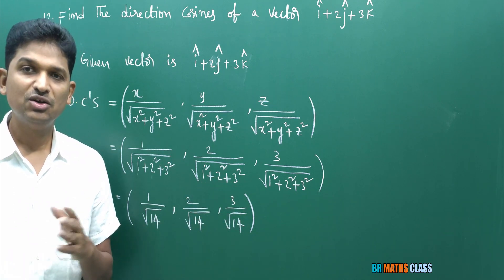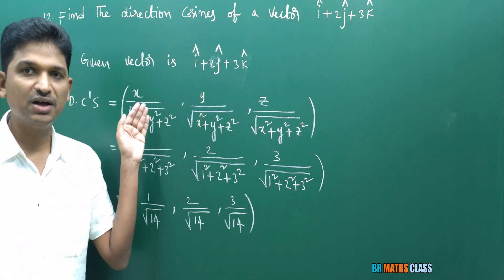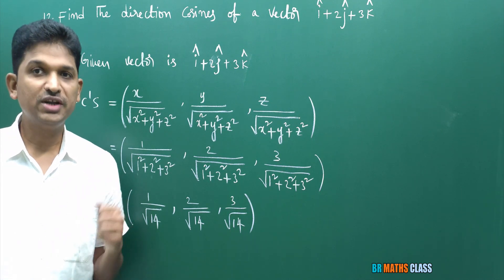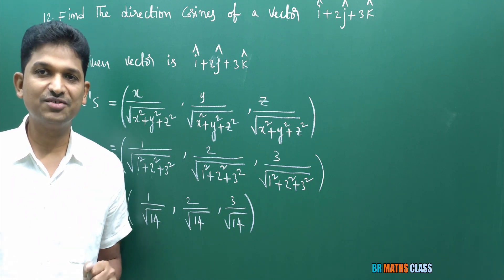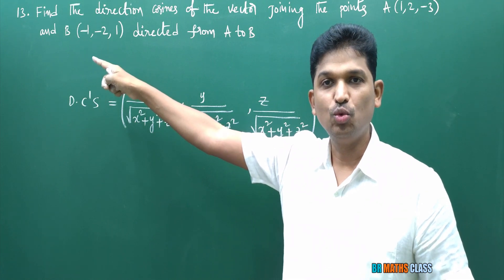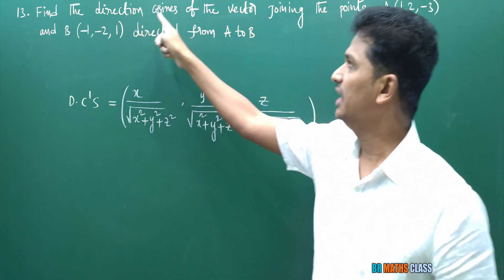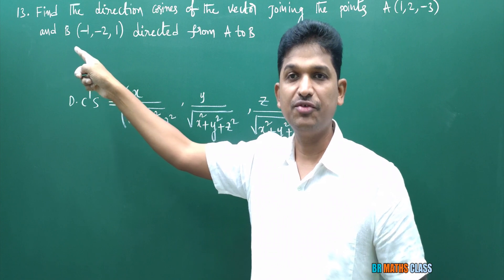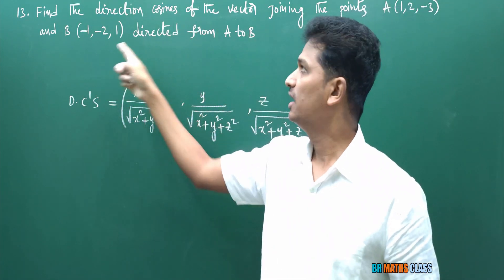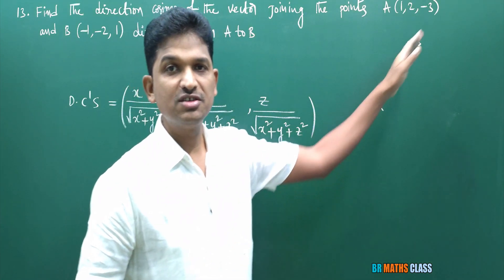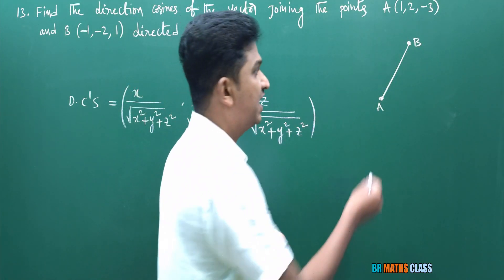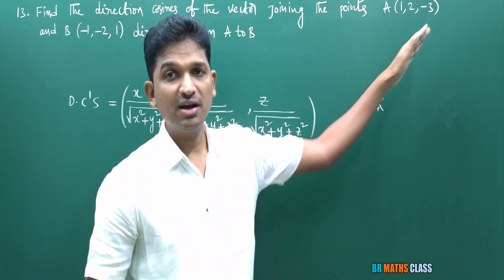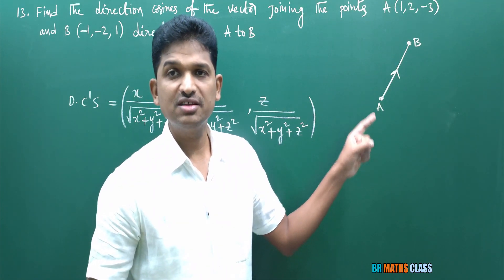I hope you understand. You can do this problem very easily — the only thing is you need to know this formula for direction cosines of a vector xi cap plus yj cap plus zk cap. Now we will move to the next question, also related to direction cosines of a vector. Observe question number 13: find the direction cosines of a vector joining the points A and B, directed from A to B.